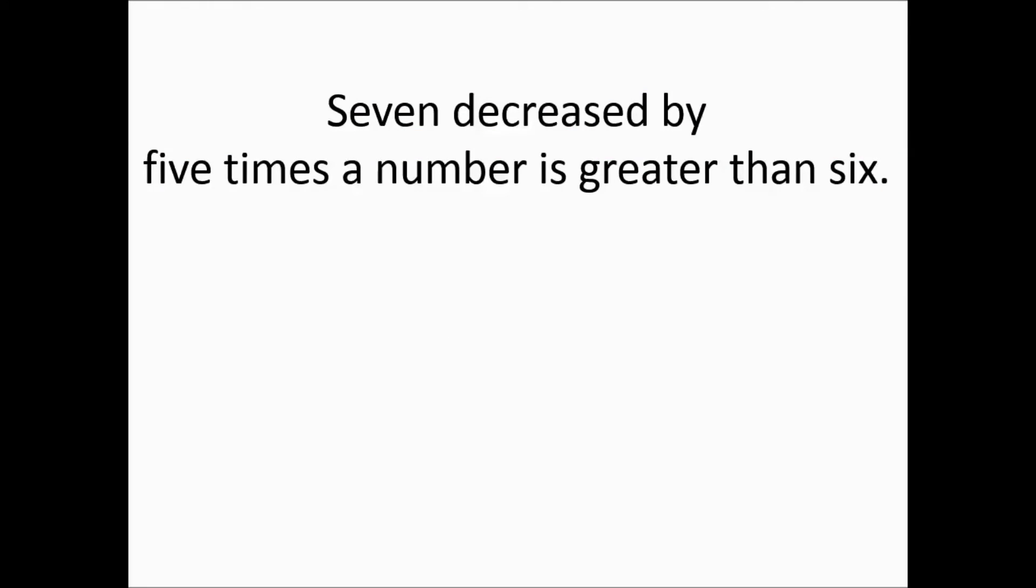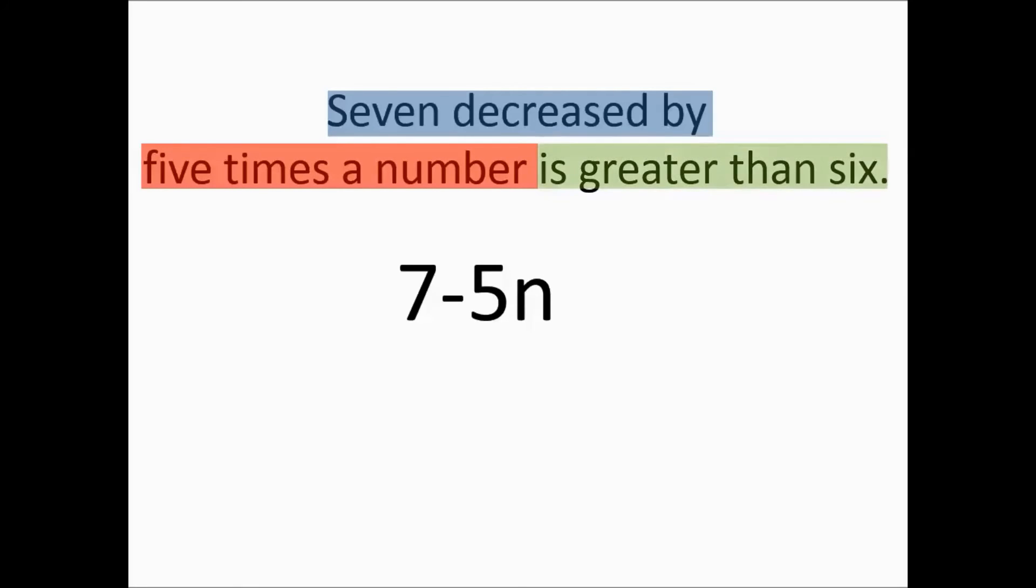Next we have this one: seven decreased by five times a number is greater than six. Seven decreased by, that's going to be subtraction. It's not going to be one of those switcheroo types, though. It's just seven minus. And then we have the five times a number is greater than six. We're going to have the inequality sign.